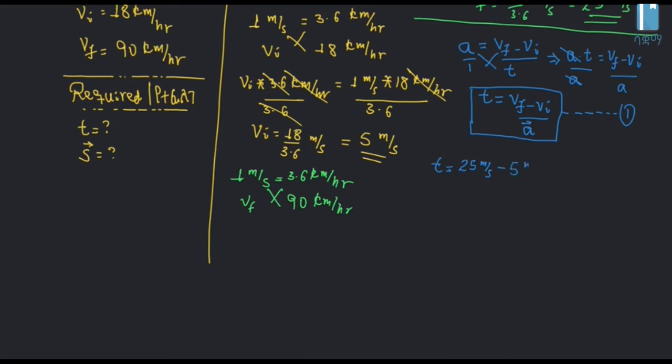If we want to use the formula, we check the initial values. The time equals Vf minus Vi over acceleration — that is, 25 minus 5 meters per second over 3 meters per second squared.